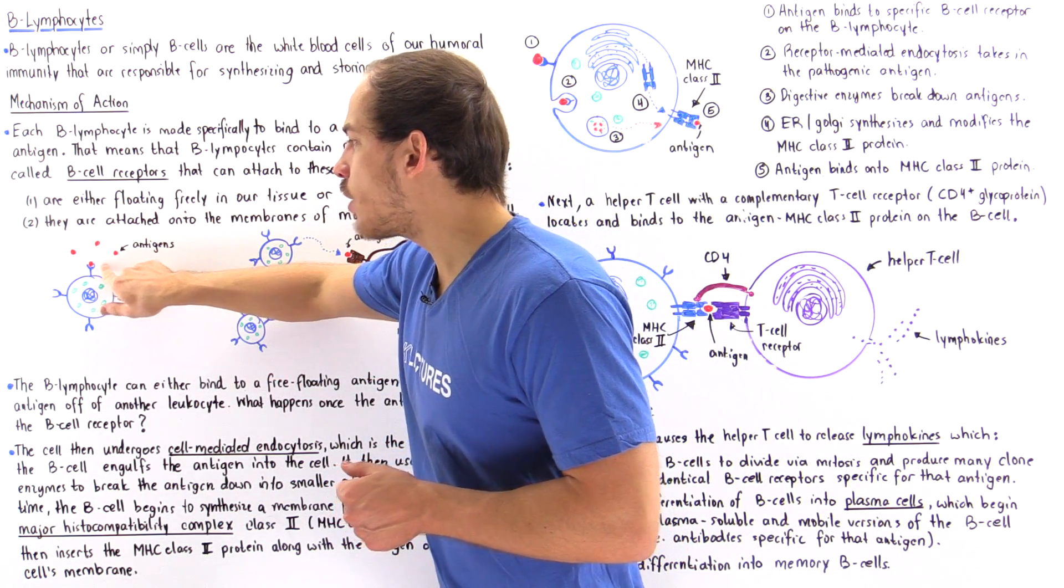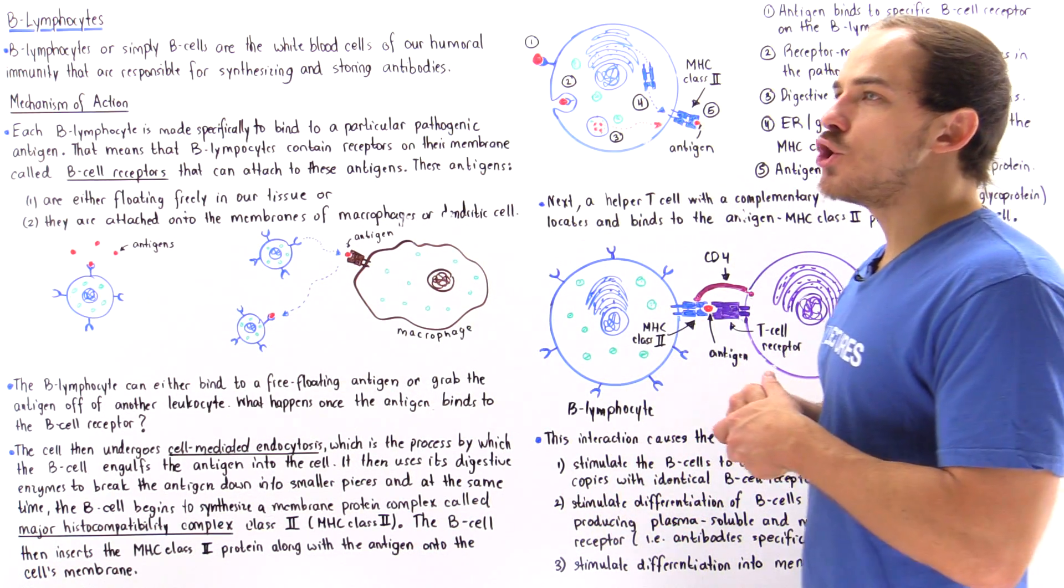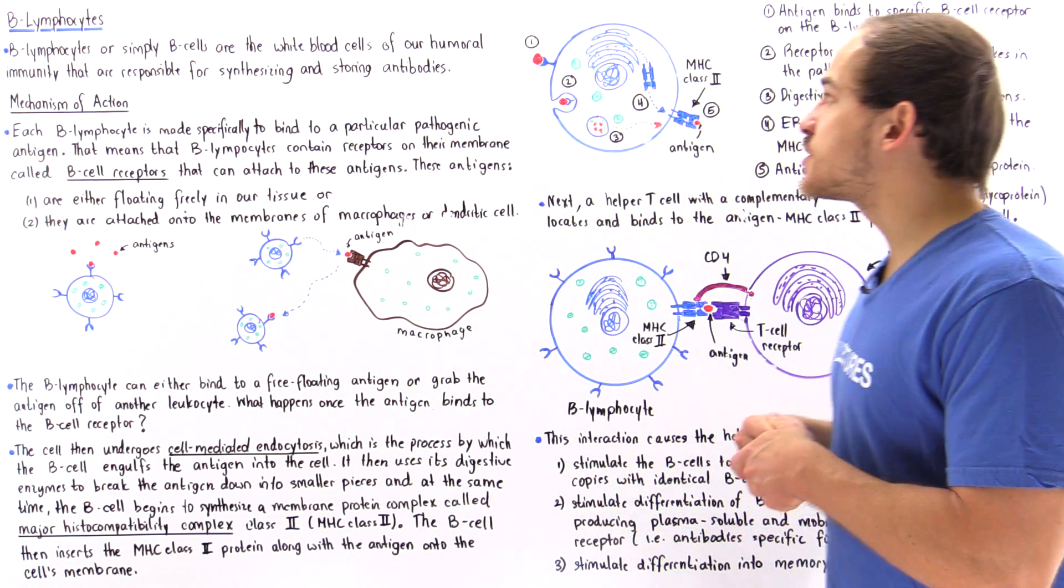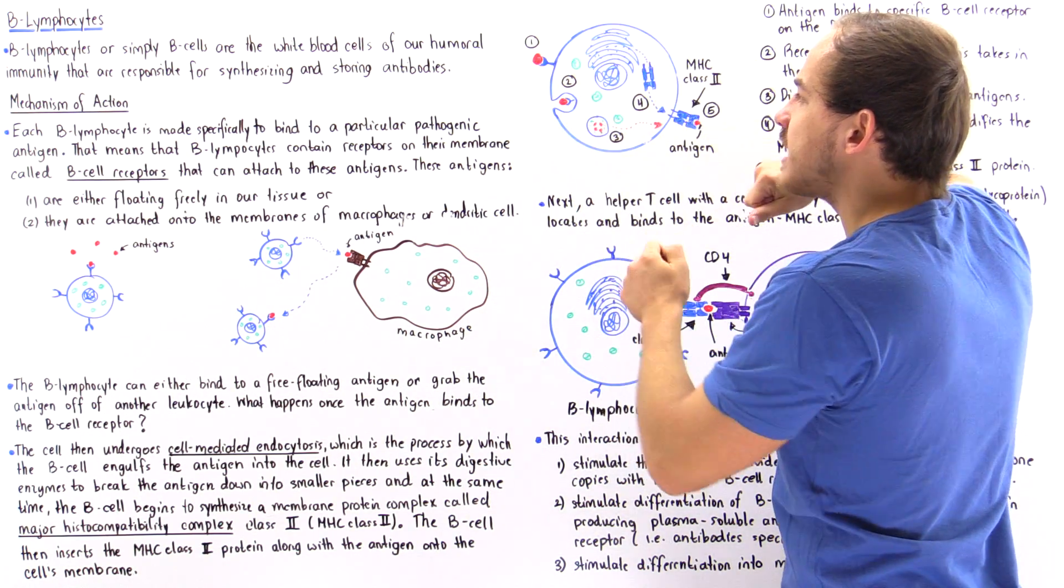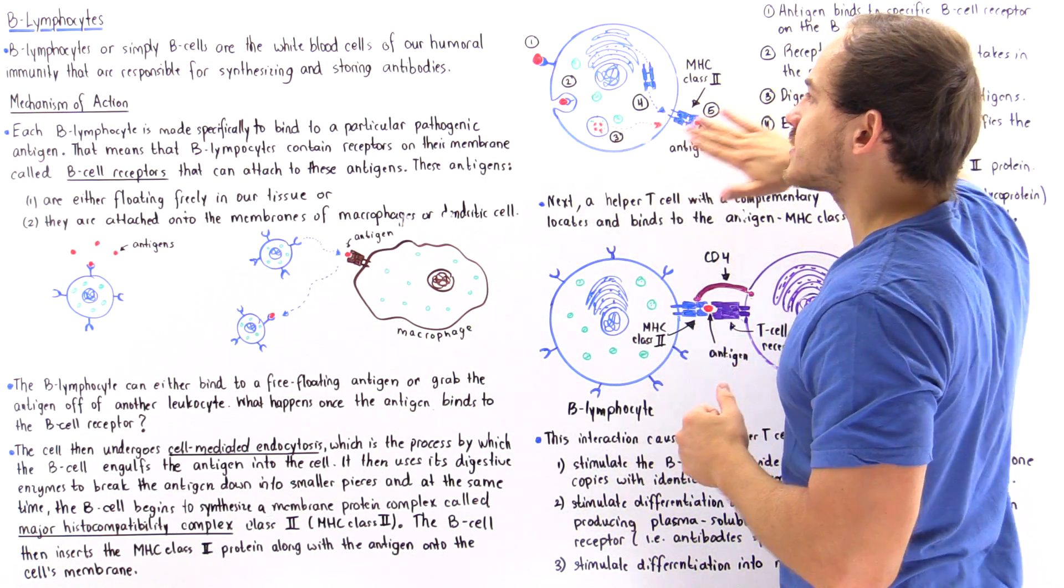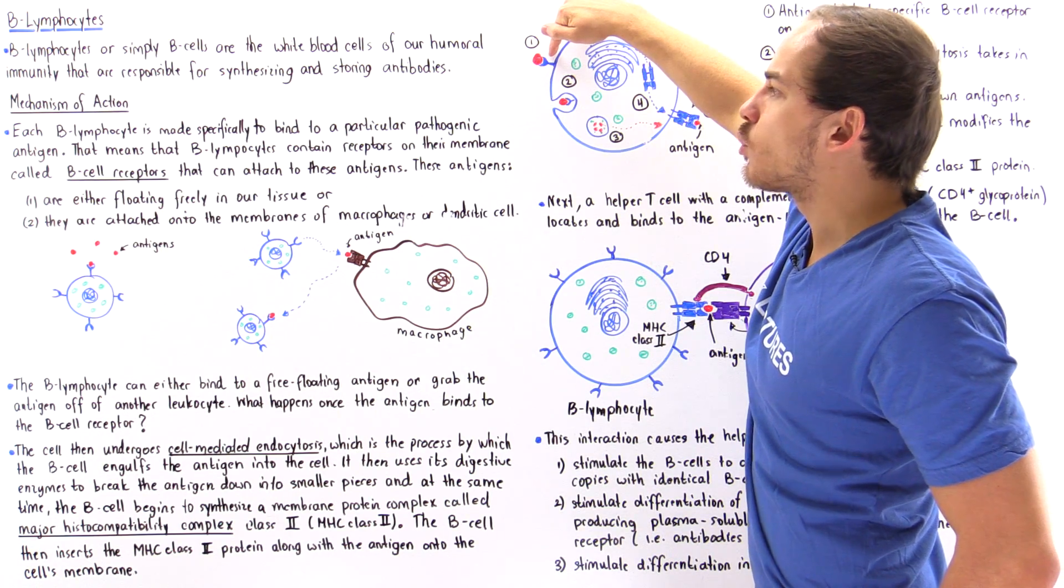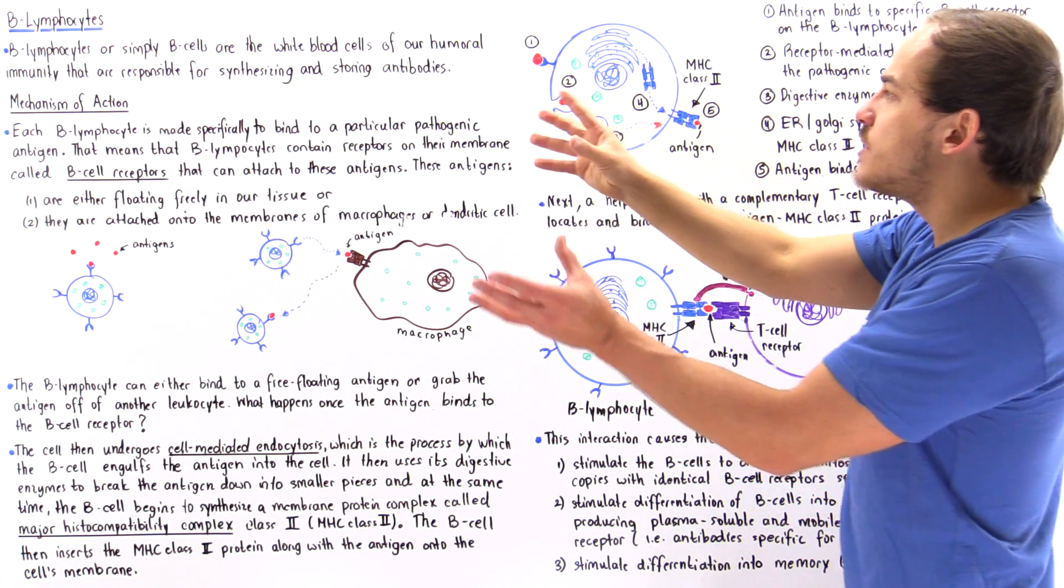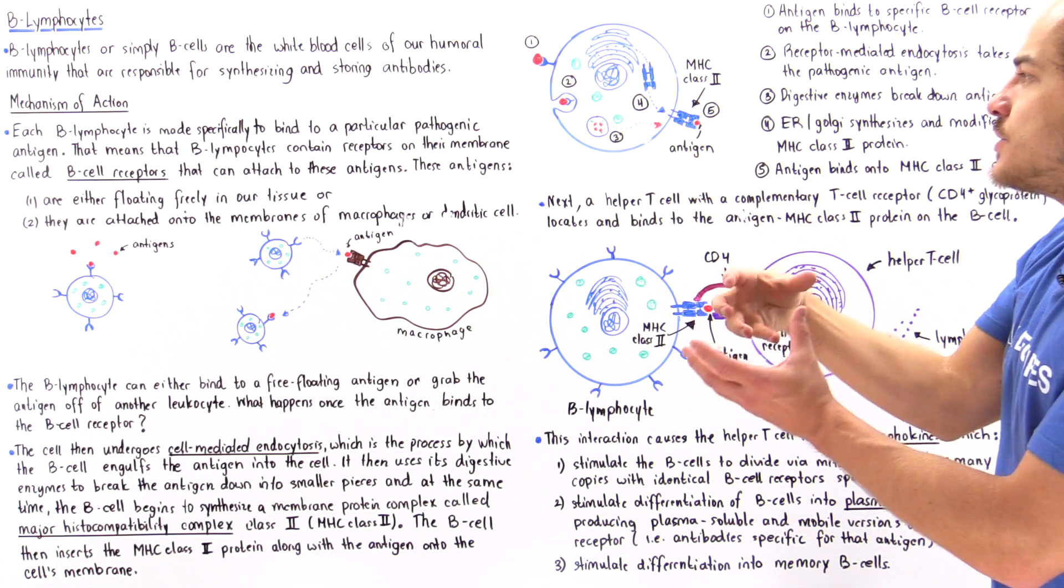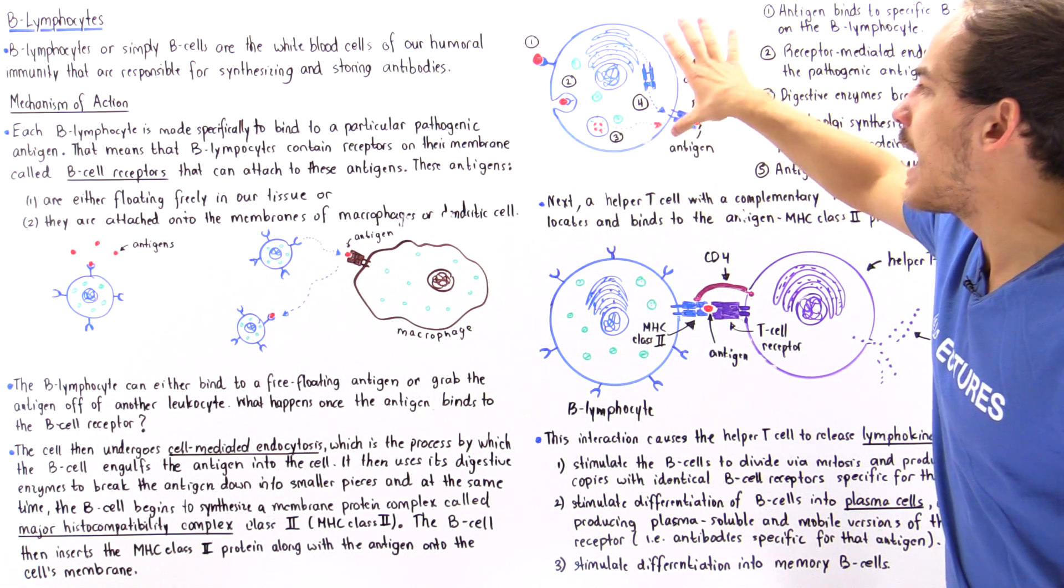What happens once the antigen is bound onto the B cell receptor? A process known as cell-mediated endocytosis begins to take place. This process invaginates the cell membrane and forms a vesicle that is brought into the cytoplasm, as shown in this diagram. The antigen shown in red binds onto the B cell receptor, initiating endocytosis, which ultimately forms an internal vesicle with the antigen inside.